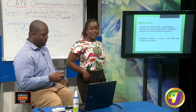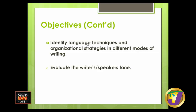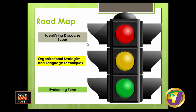So today, viewers, we have a list of objectives taken from the Communication Studies syllabus. Our first objective is to identify the characteristics, organizational features and modes of expression of different genres and types of writing and speech. Then we're going to distinguish between the writer's main idea and his or her main purpose or points. We'll identify language techniques and organizational strategies in different modes of writing, and then evaluate the writer's tone. On this journey, we will be identifying types of discourse, organizational strategies and language techniques, and how we evaluate tone.